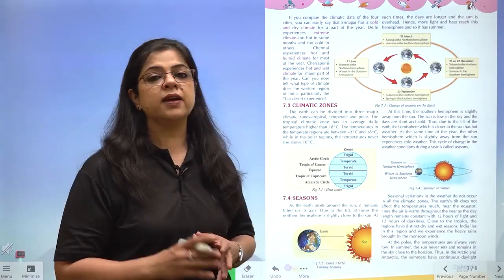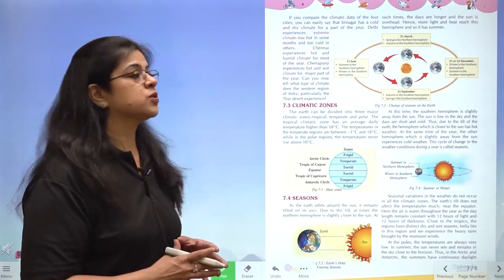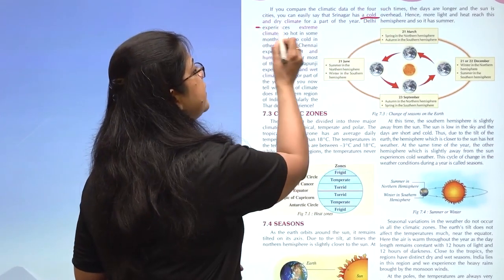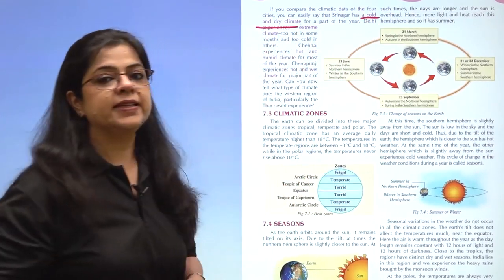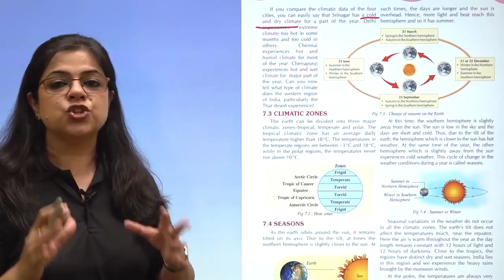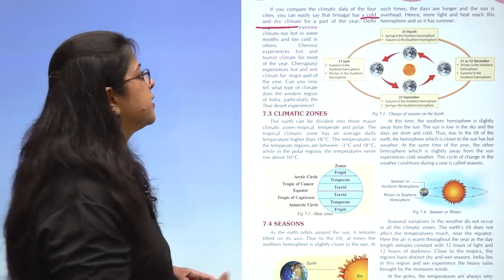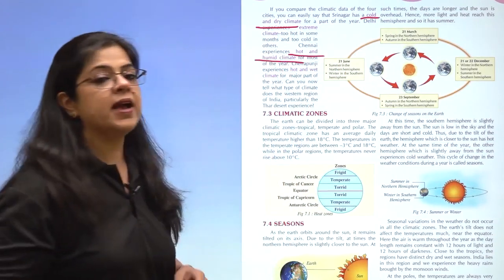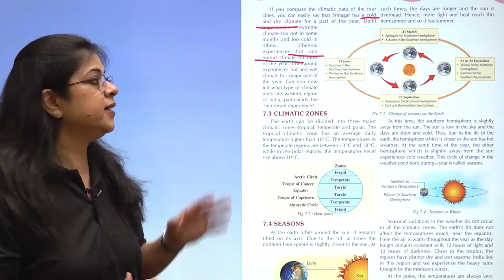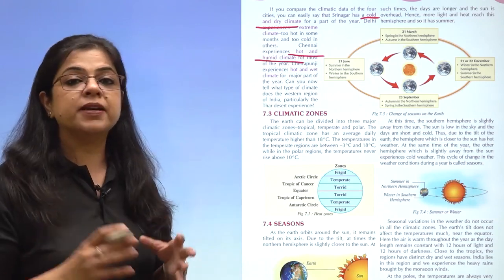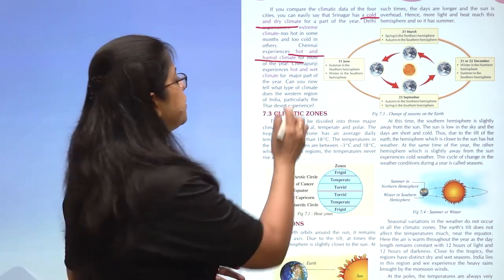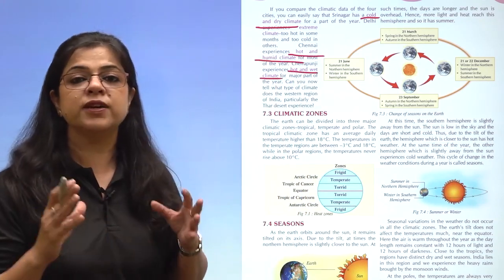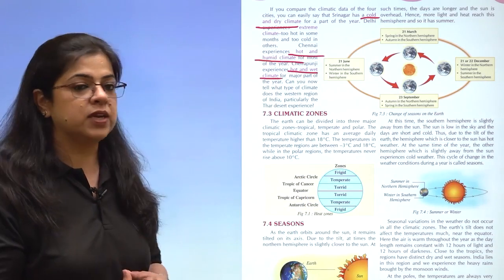Climate is the average long-term weather condition of an area. Climate can be cold and dry, like in Srinagar. It can be hot and humid, as in Chennai. The climate can also be hot and wet, as in the case of Cherrapunji.